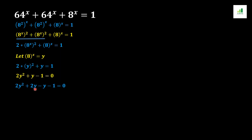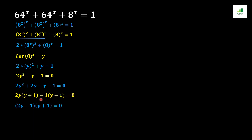In the next step we take 2y as a common factor from the first two terms, giving 2y(y plus 1), and then take minus 1 as a common factor from the last two terms, also giving (y plus 1) as the remainder. We then factor out (y plus 1) from the whole expression, leaving (y plus 1)(2y minus 1) equals 0.